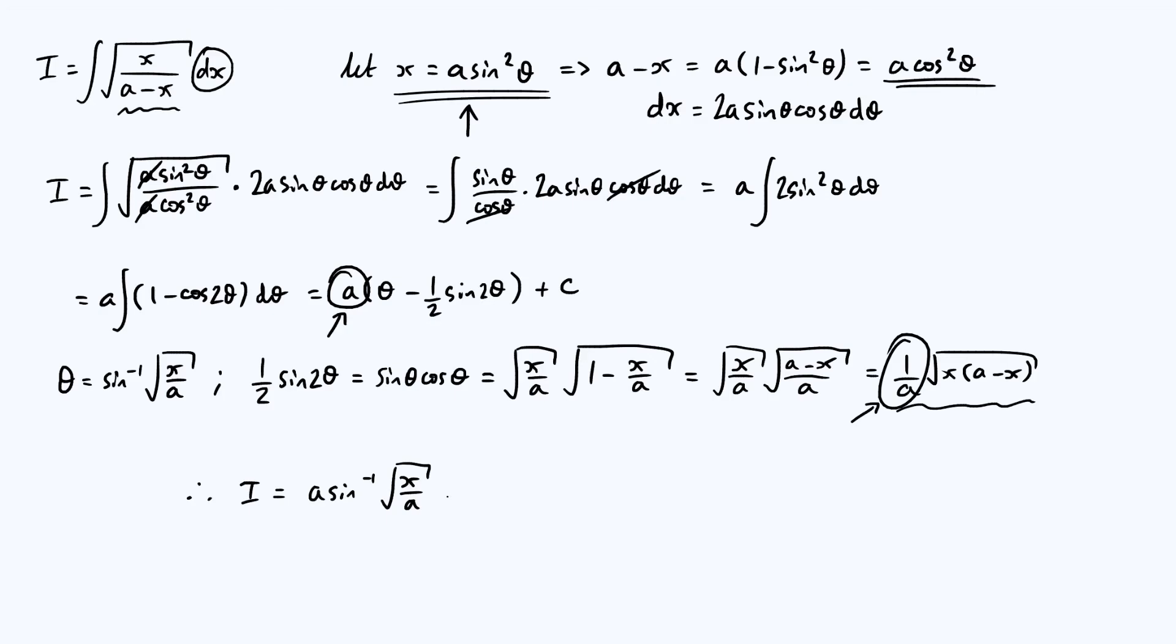And so your second term is just minus the square root of x times a minus x. And then you've got your constant of integration plus c.